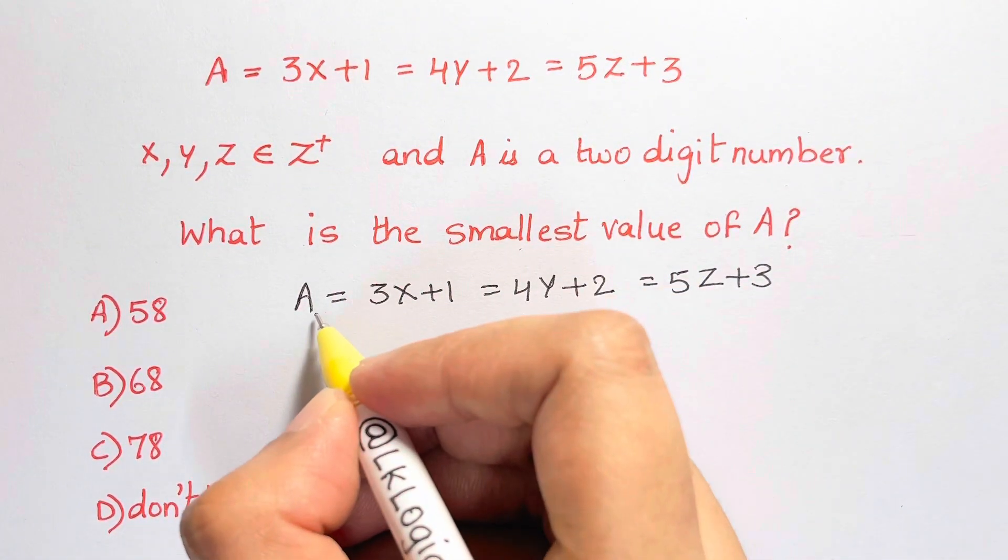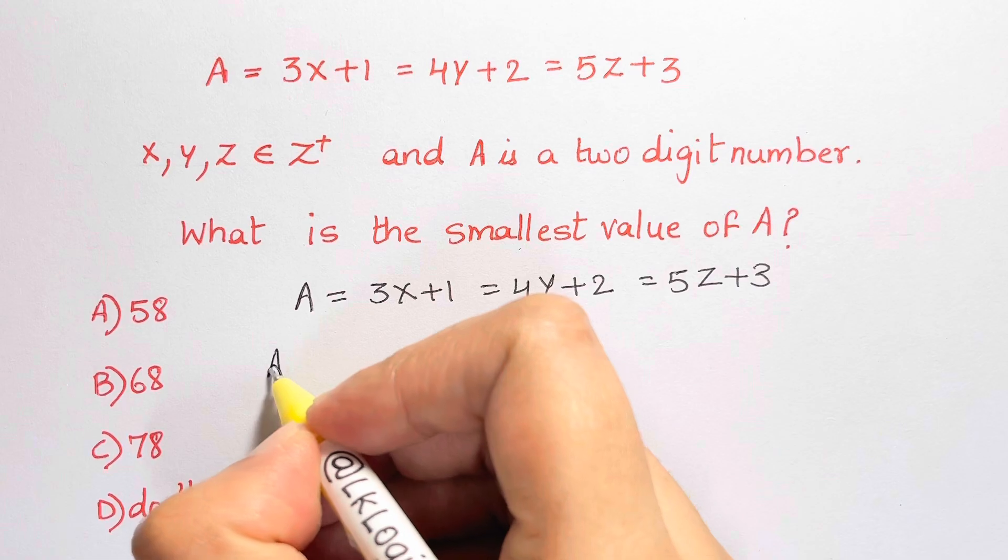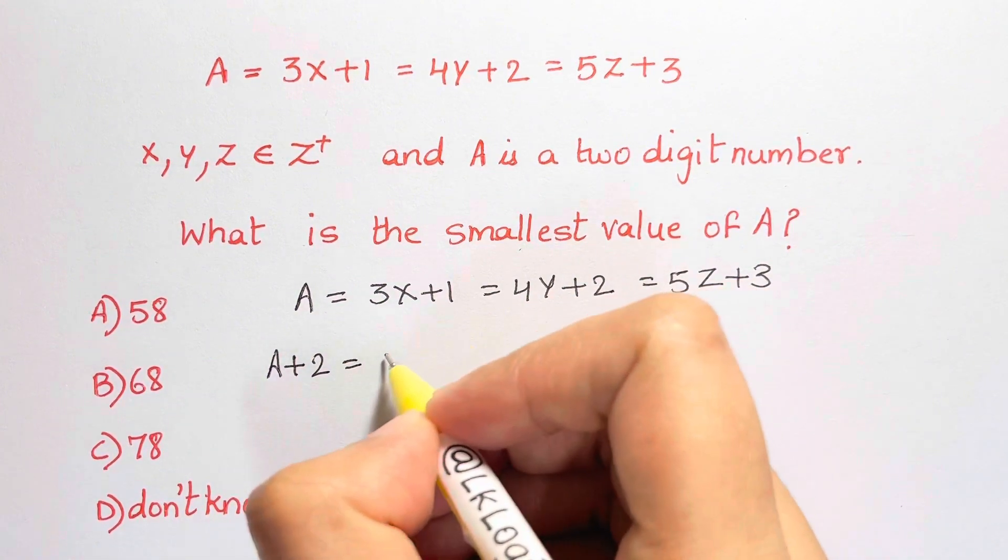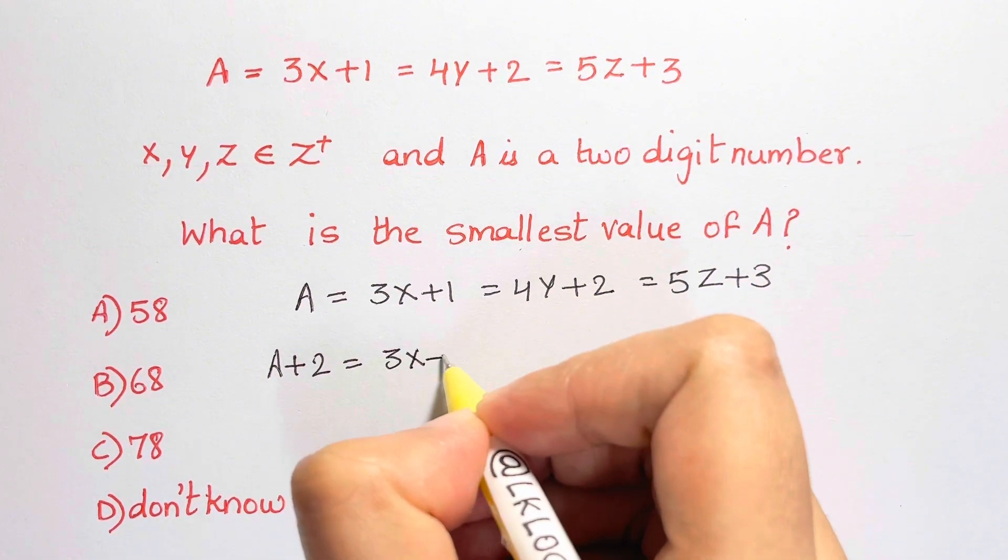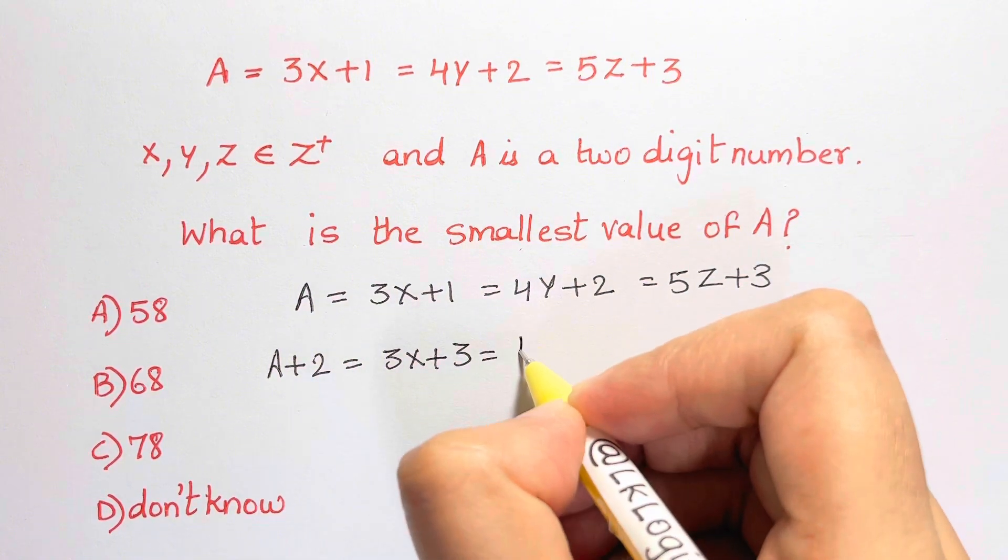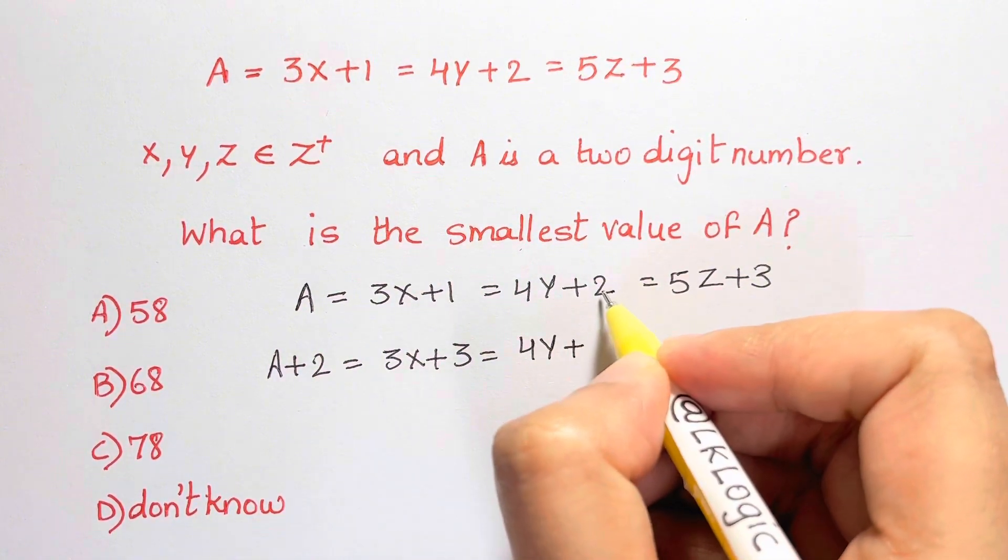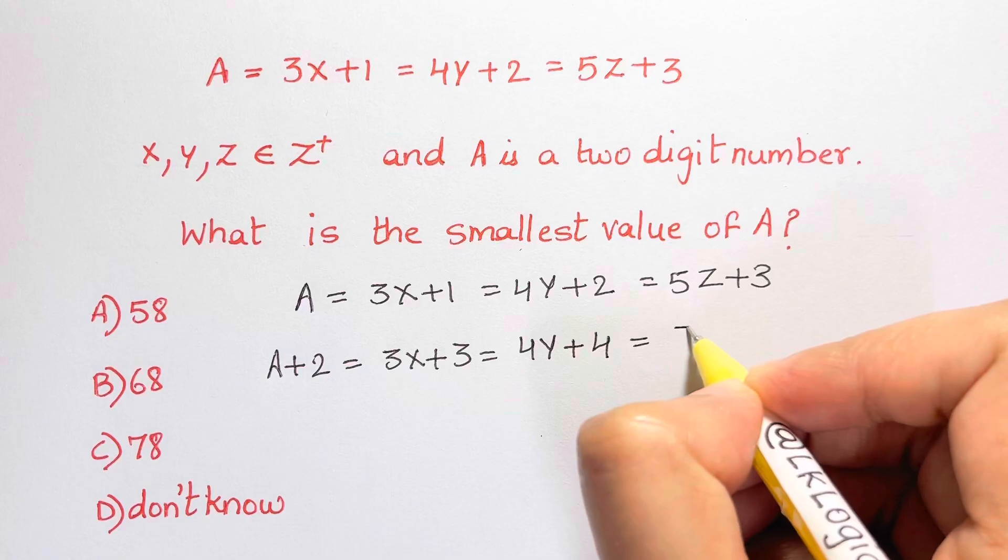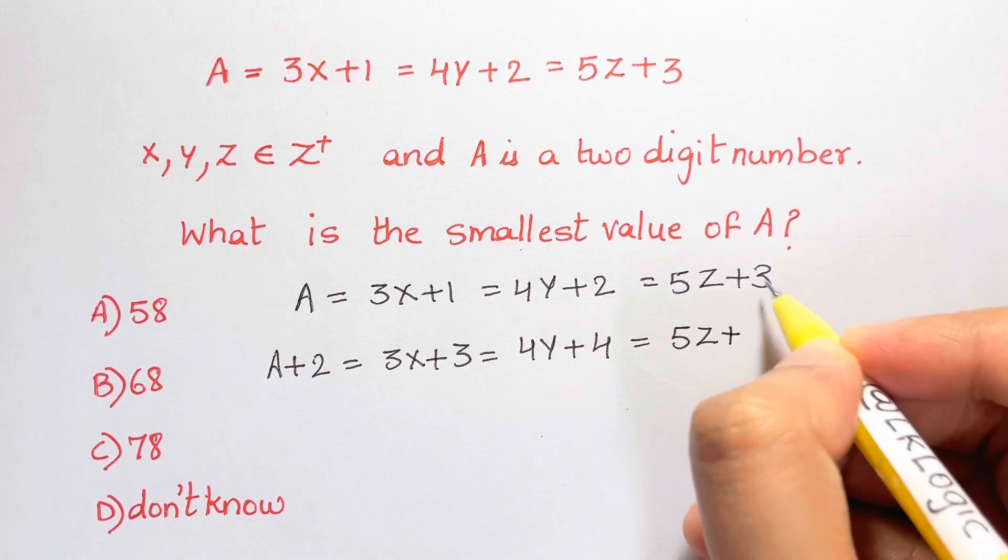So here, let me add 2 to A. So A plus 2 is equal to 3x plus 3. And then here you will have 4y plus 2 plus 2, which is 4y plus 4. Here I'll have 5z plus 3 plus 2, which is 5z plus 5.